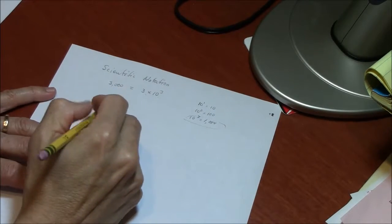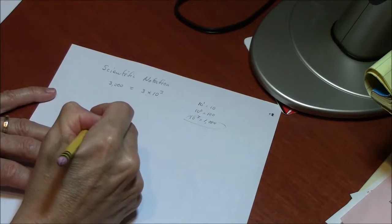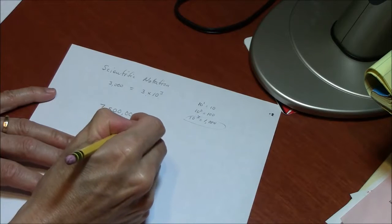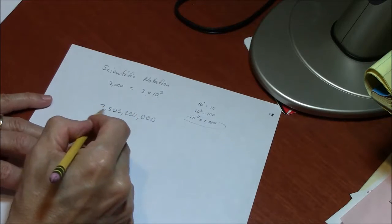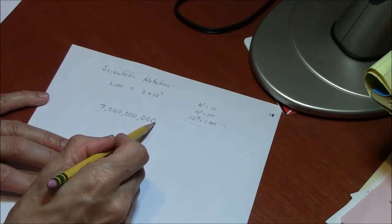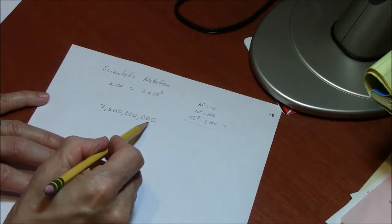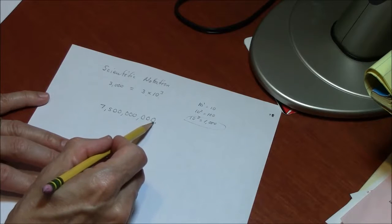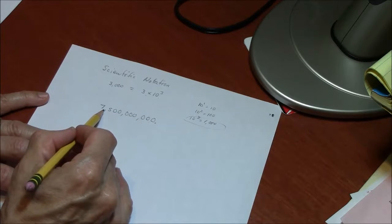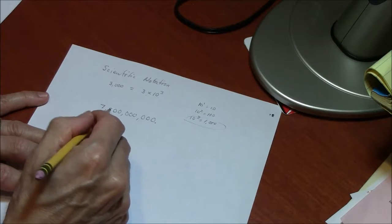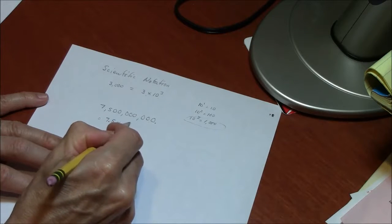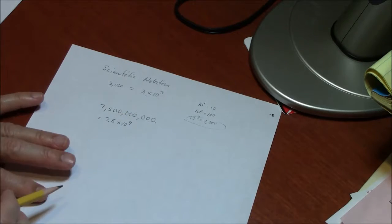If I happen to have a very large number, let's just say 7,500,000,000, I need to be able to count where the decimal place goes. If the decimal place starts here, and I want to express this in scientific notation, I need to move that decimal place 1, 2, 3, 4, 5, 6, 7, 8, 9 places. This large number becomes 7.5 times 10 to the ninth in scientific notation.